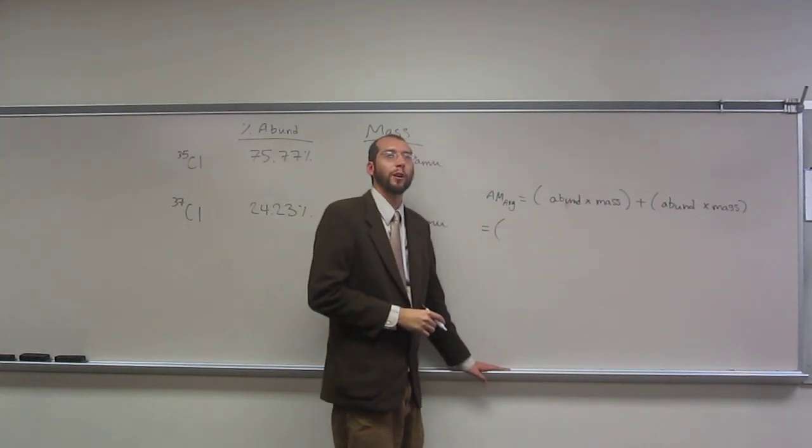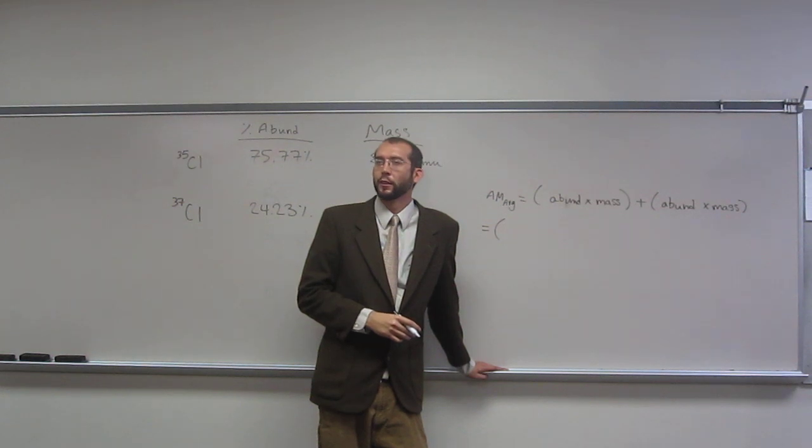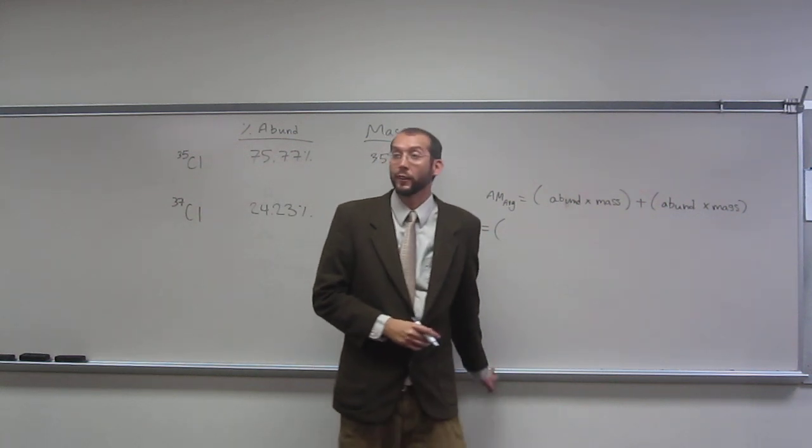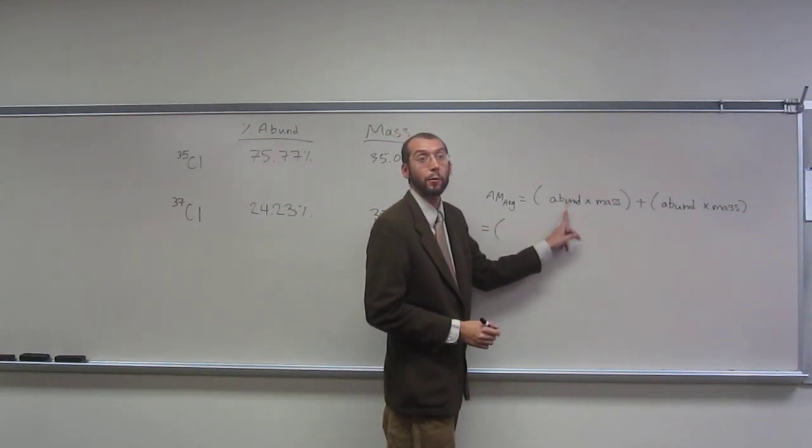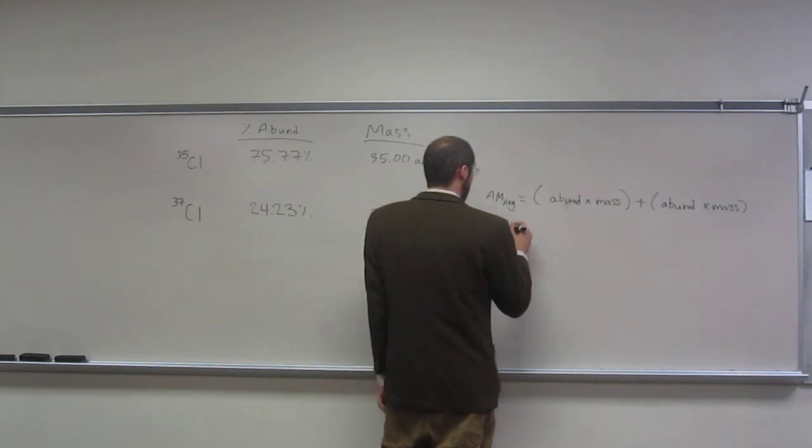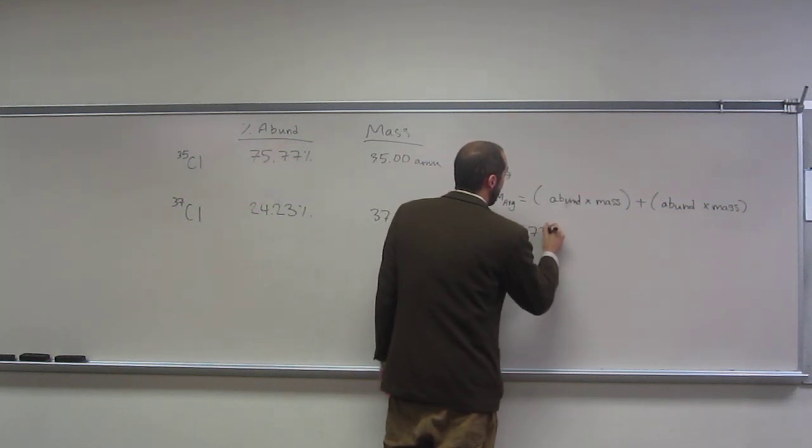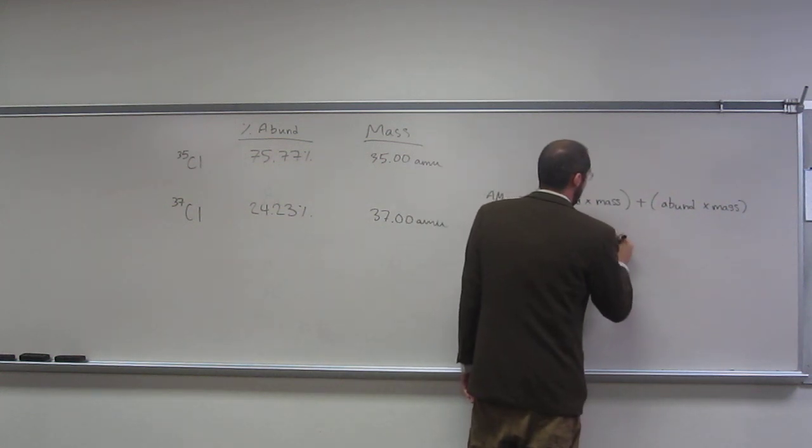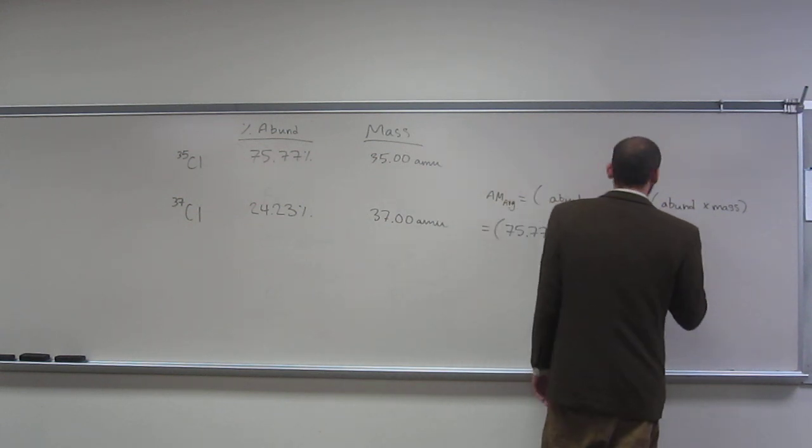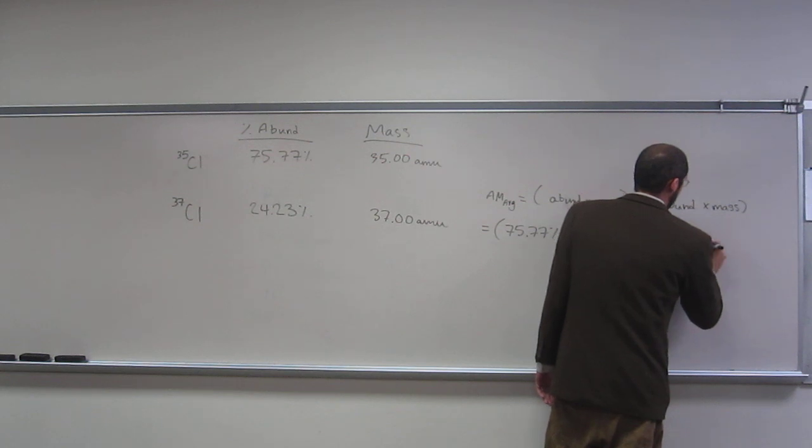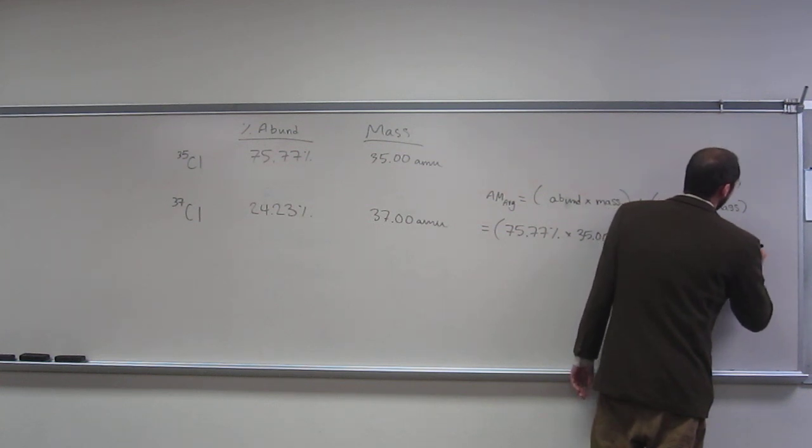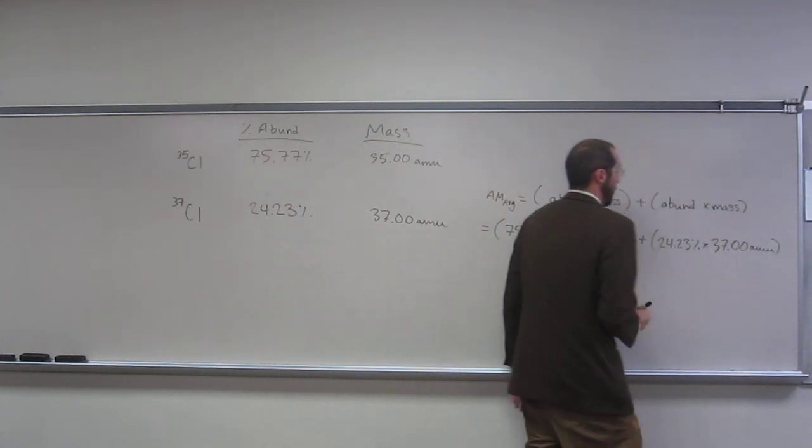So how do you get a ratio from a percentage? Does anybody know? Divide it by 100, exactly. That's how you do it. So this is the abundance, not the percent abundance. So I'm going to do it. First, I'm going to just multiply it out and then divide by 100. And it's divided by 100% as a matter of fact, right? Because we've got to remove that percent sign.